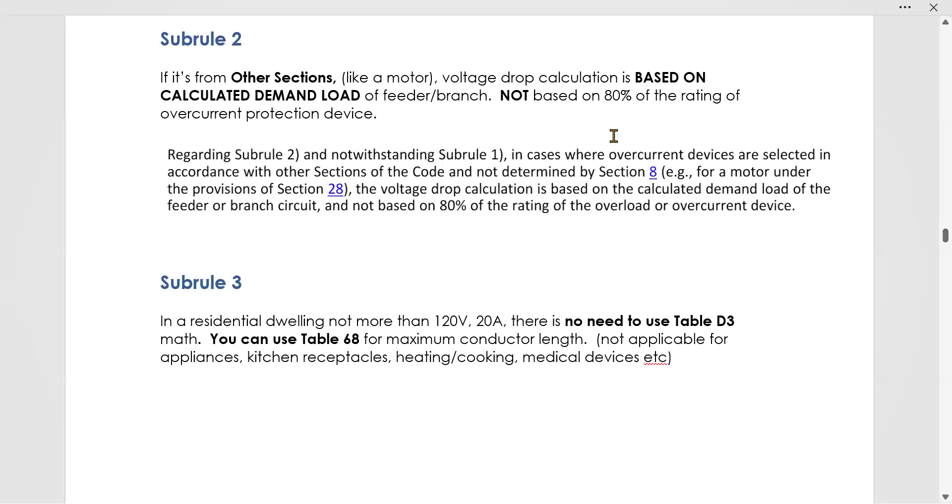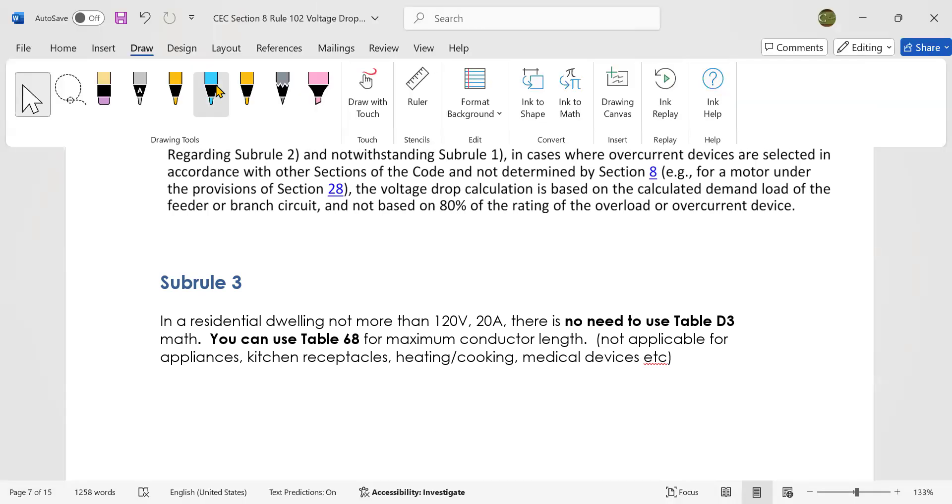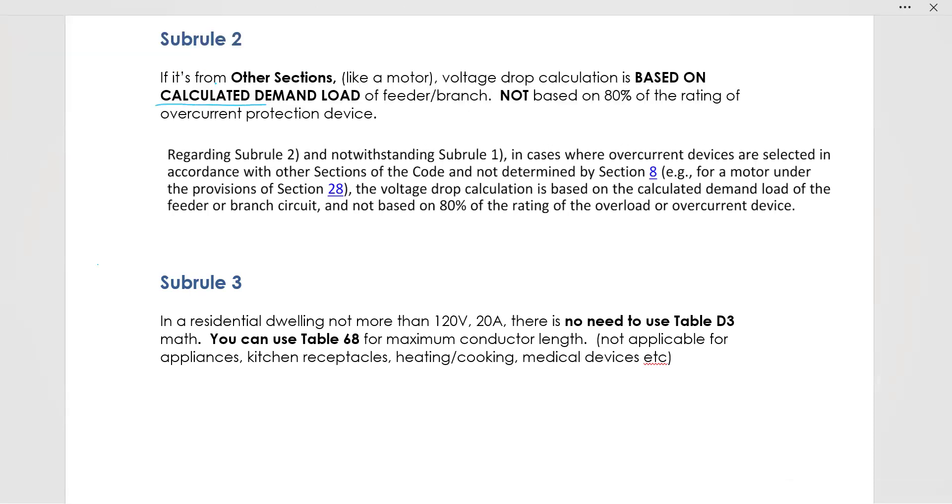Subrule 2 of 8.102 says that if you're from other sections, for example, like the motor section, then the voltage drop calculation can be calculated based on the demand load. It can be calculated based on the calculated demand load of the feeder or branch, not based on 80% of the rated over current protection device. All right. So you have to know if you're coming from other sections, then you can use subrule 2. Thank you for subrule 2.